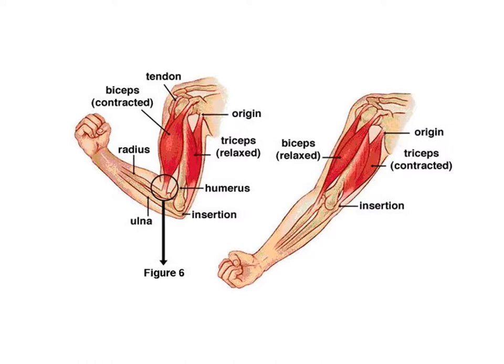Where muscles connect to bone, the three connective tissues — epimysium, perimysium, and endomysium — merge together to form thick cord-like tendons. Tendons connect muscle to bone, which should not be confused with ligaments, which connect bone to bone. Where skeletal muscles connect to other muscles, they form thickened sheets called the aponeurosis. Some muscles attach to bones without forming a distinct tendon or aponeurosis, simply interweaving collagen fibers between the epimysium and the bone — this is called fleshy muscle attachment.